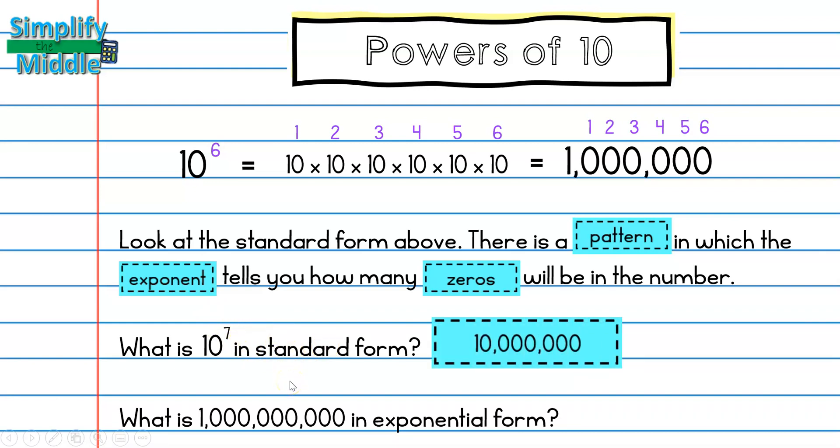In this question, what is 1 billion in exponential form? I know that if there is a relationship between the exponent and the number of 0s, then there is a relationship between the number of 0s and the exponent. So I'll simply count how many 0s are in the standard form.